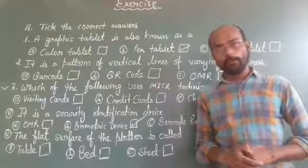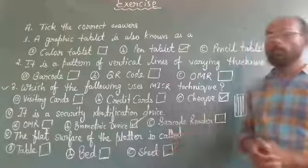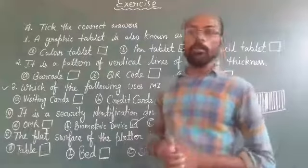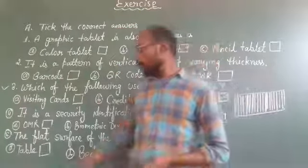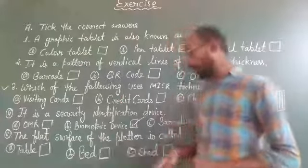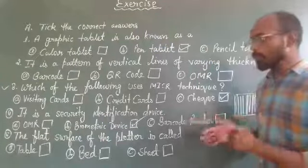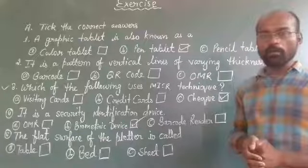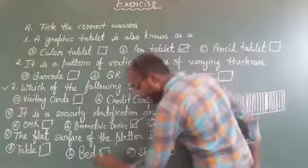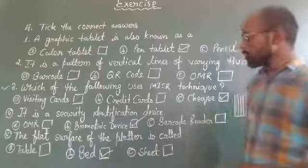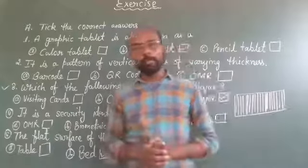Question number 5 is: the flat surface of the plotter is called dash. Option A is table, option B is bed, and option C is seat. If you are choosing option B, then your answer is correct. The flat surface of a plotter is called bed.